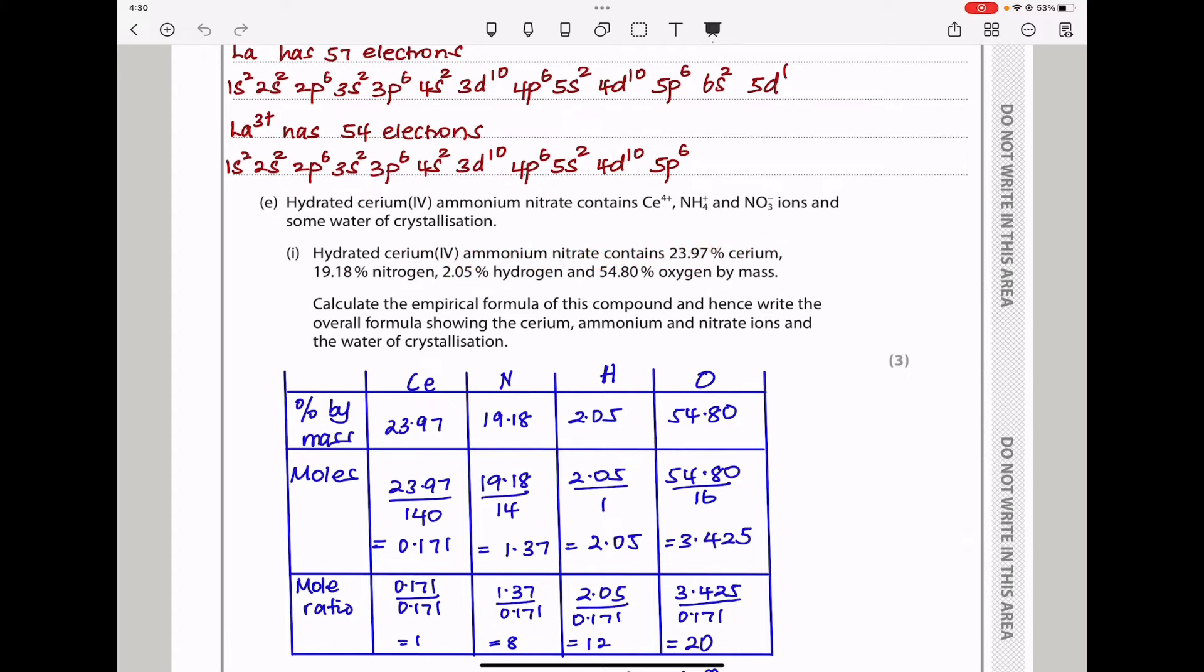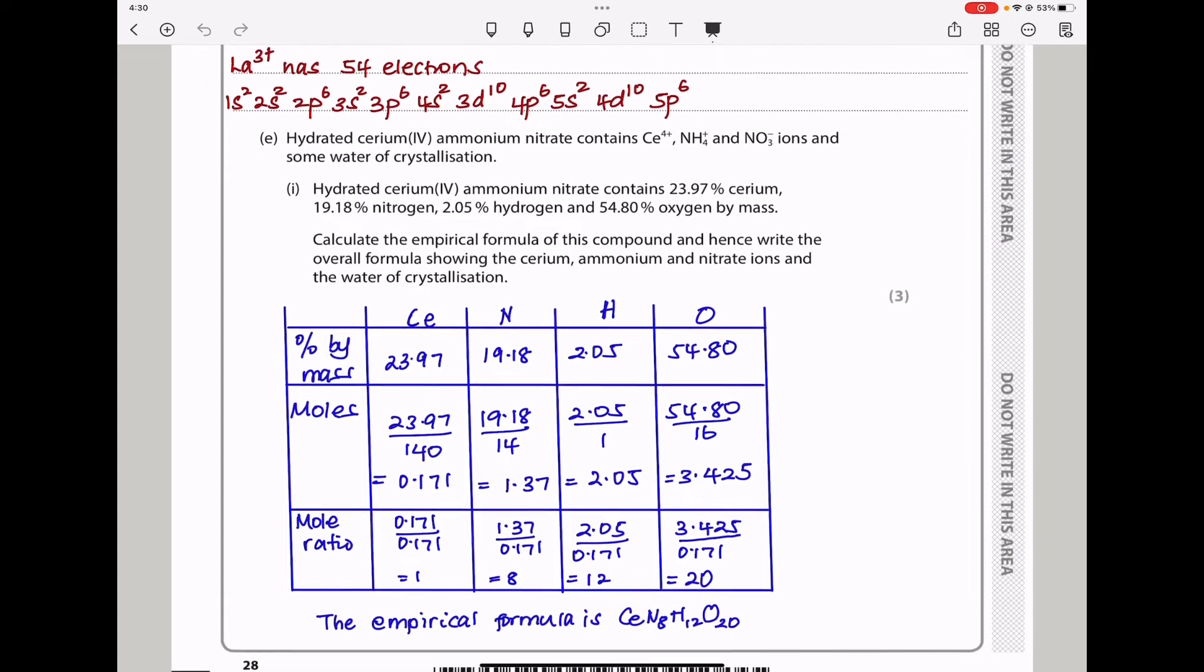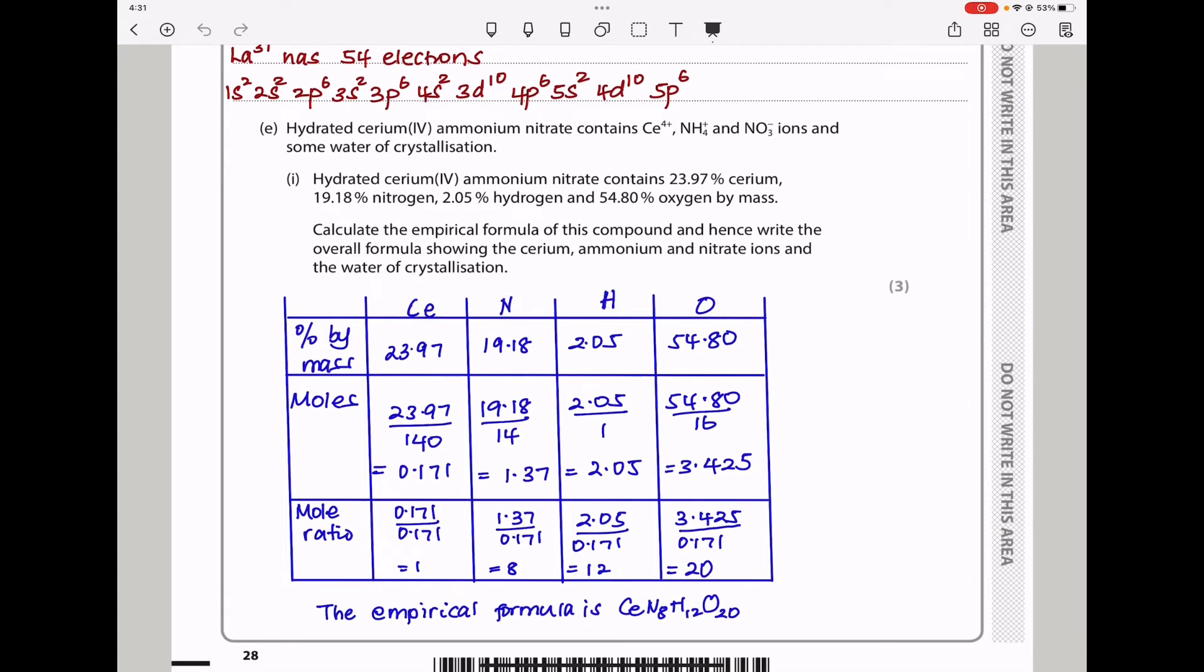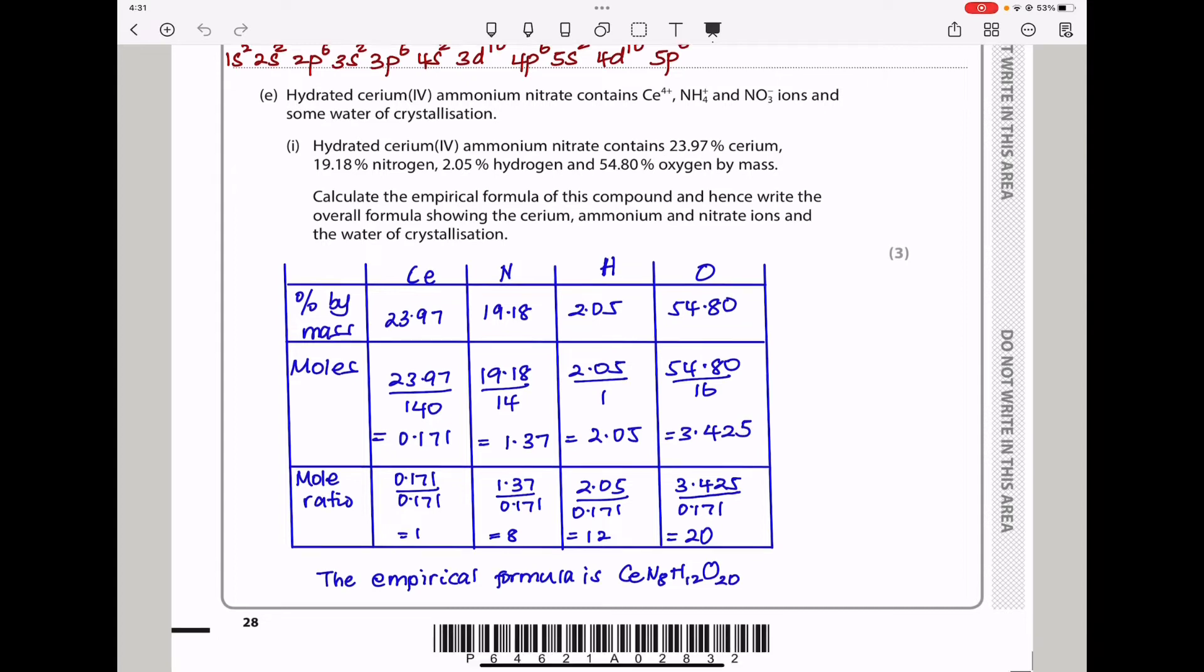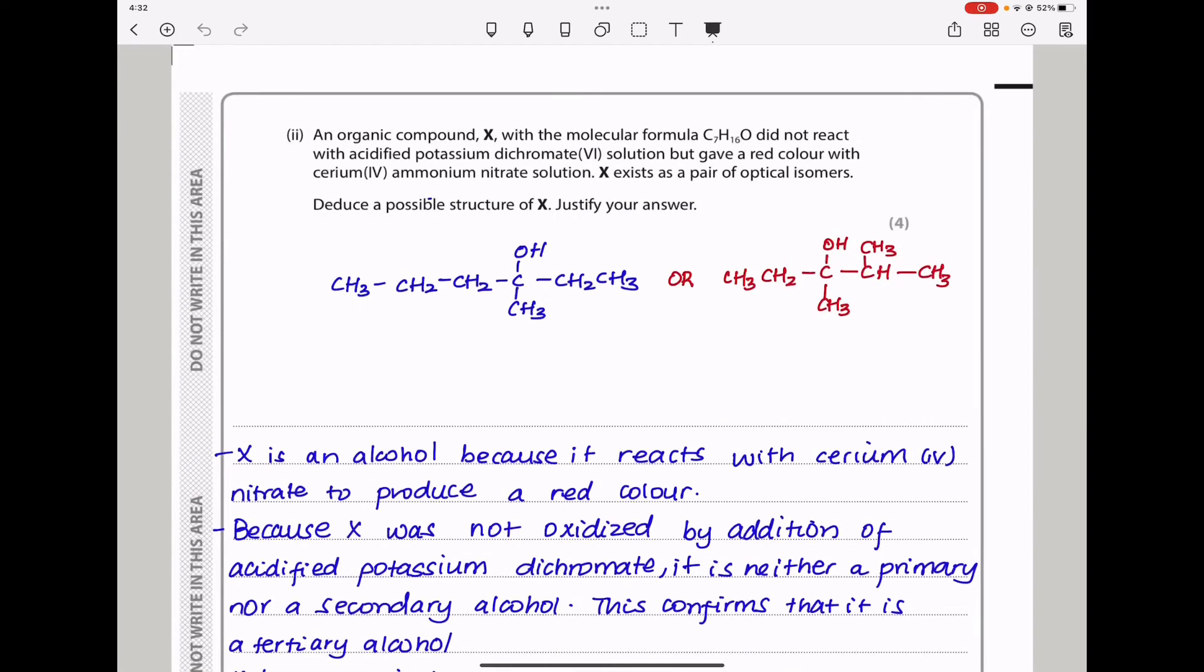Part E says hydrated cerium-4 ammonium nitrate contains Ce4+, NH4+, NO3- ions and some water of crystallization. Hydrated cerium-4 ammonium nitrate contains 23.97% cerium, 19.18% nitrogen, 2.05% hydrogen and 54.80% oxygen by mass. They say calculate the empirical formula of this compound. I began by writing the Ce, the N, the H and the O. Each of the percentages by mass are shown here and we will divide through by the atomic mass to find the number of moles. We go through to find the mole ratio because these were the smallest number of moles we divide through by that to give us 1, that divide by that to give us 8, that divide by that to give us 12 and that divide by that to give us 20. So this is going to be the empirical formula.